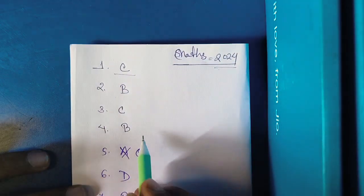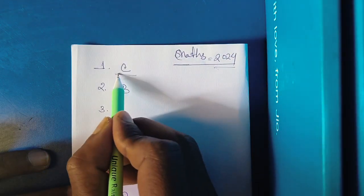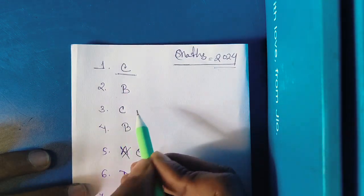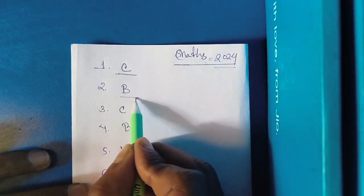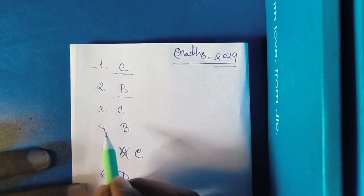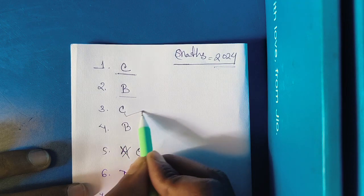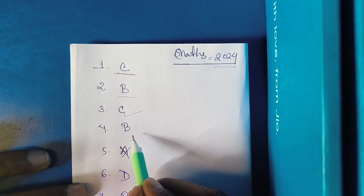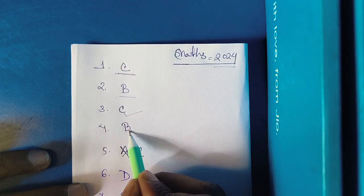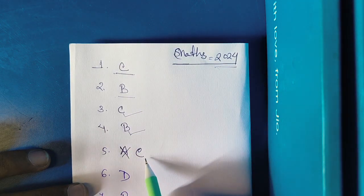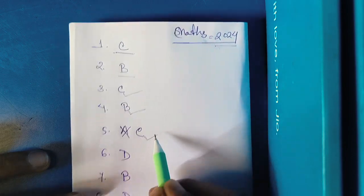You will need a question. Second question, right answer, option number B. Third question, right answer, option number C. Fourth question, right answer, option number B. Fifth question, right answer, option number C.